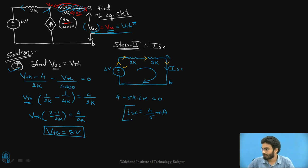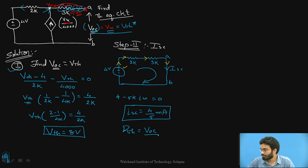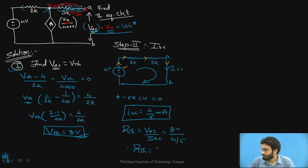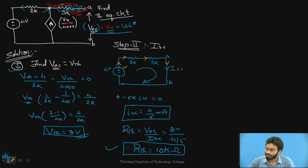This helps us calculate RTH, which is Step 2: RTH equals VOC divided by ISC. The value of VOC is 8 volts, and ISC is 4/5 milliamps. On calculating this, the value of RTH comes out to be 10k ohms. So the Thevenin's resistance for the given circuit is 10k ohms. This completes Step 2.